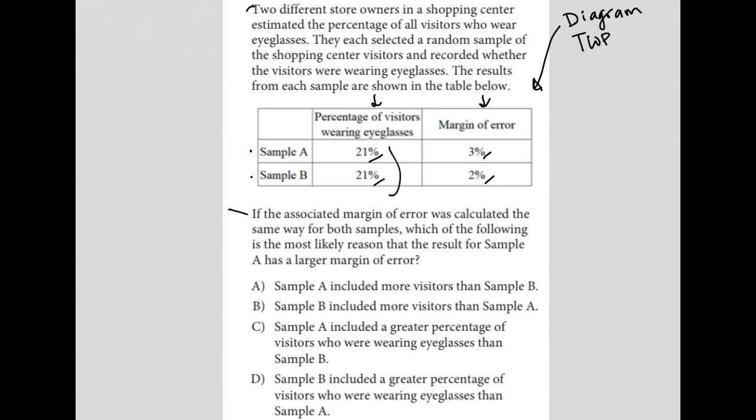So what is margin of error? Margin of error is a calculation that basically lets you know how far off the information from your sample is relative to the entire population from which you pulled that sample. We understand that these shop owners did not question or stop every single person at the shopping center. They both selected a random sample of the shopping center visitors.